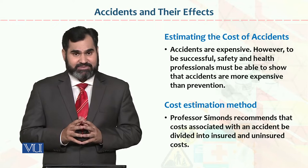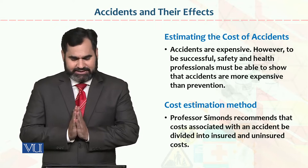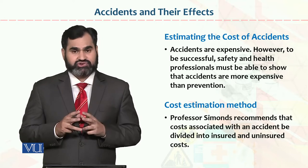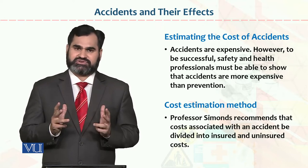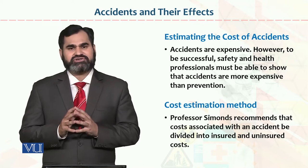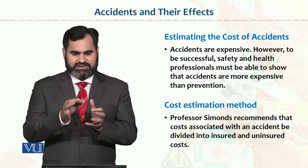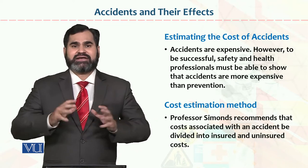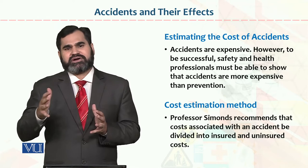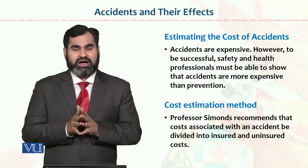Cost estimation methods — which are the methods? Professor Simons recommends that costs associated with an accident be divided into two things: number one, insured cost, and number two, uninsured cost. If you add these two things together, then the total cost of accidents can be determined. Insured cost covers life insurance, fire insurance, marine insurance, health insurance, and automobile insurance. Some parts of the costs are uninsured, but if you add both costs, we call it the cost estimation method.